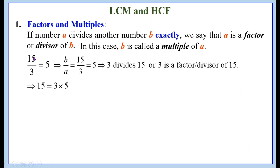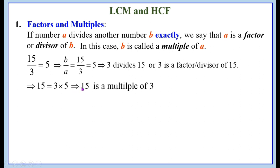That is, 15 divided by 3 equals 5 can be written as 15 equals 3 into 5. Remember that A equals 3 and B is taken as 15. That means B is a multiple of A — that is, 15 is a multiple of 3.